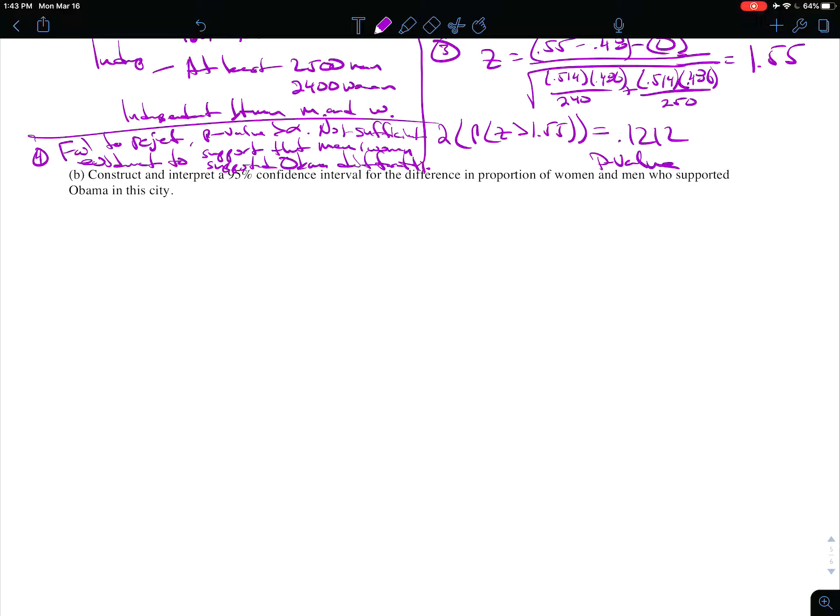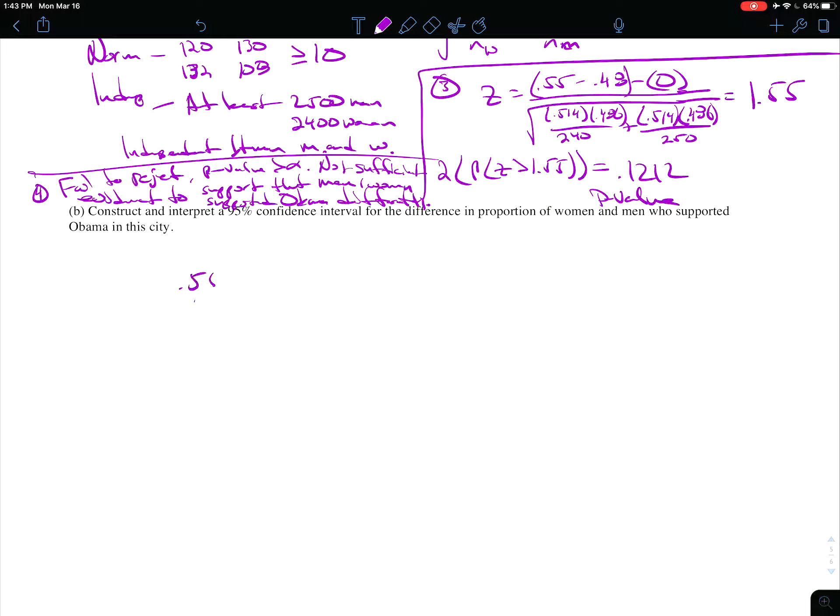Part B of this question asks you to construct a confidence interval for this same situation, and we've taken care of defining parameters, checking conditions. So the confidence interval, it's going to look a lot like our equation from up there: 0.55 minus 0.48 plus or minus. Now the z we're going to use for 95% confidence is 1.96. Don't use the z you calculated in the previous part—that was the test statistic. This is the critical value at 95%. Those are two different z's. Now we're going to multiply that to the unpooled standard deviation of the statistic, so we'll keep it in order here: 0.55 times 0.45 over 240 plus 0.48 times 0.52 over 250.